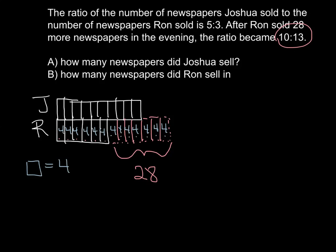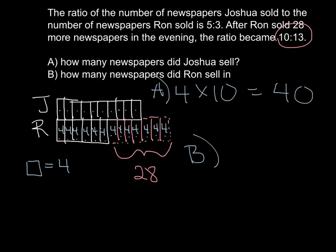Now that we've completed the bar model we can answer the questions. Part A says how many newspapers did Joshua sell? If every piece equals 4 and Joshua has 10 pieces, that means Joshua sold 4 times 10, which is 40 newspapers. For Part B, it says how many newspapers did Ron sell? Ron has a total of 13 pieces, so you'd do 13 times 4, which equals 52. So Ron sold 52 newspapers.